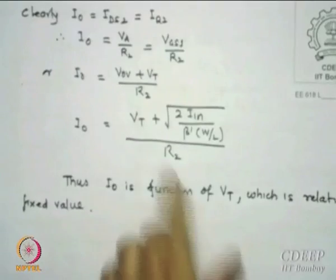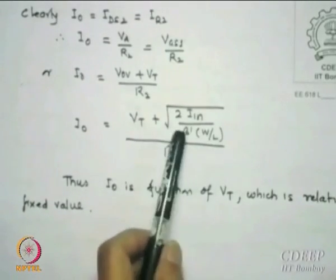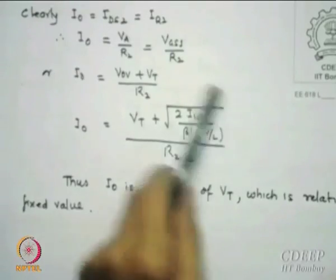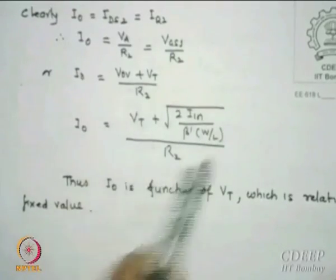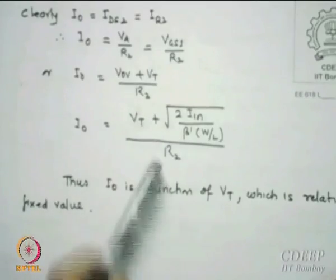You can write down the final version of the output currents. The output current is given by threshold voltage plus the square root of 2*I0 divided by beta. VGS divided by R is essentially the current, so it is written in the same form. I0*R2 is VGS, and VGS is written in this form.